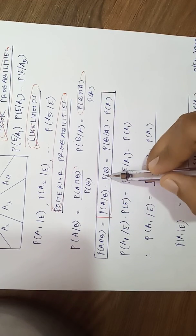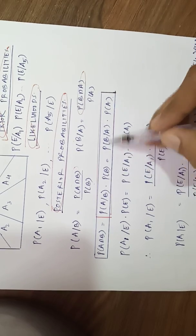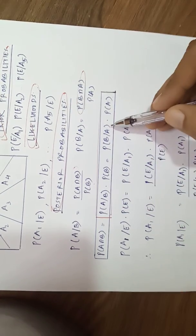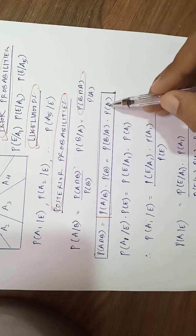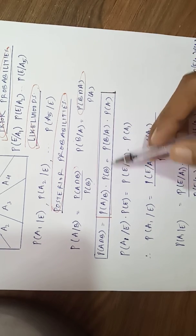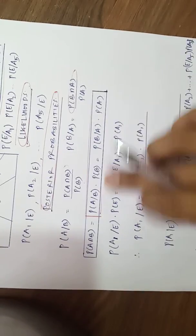Probability of a given b into probability of b is same as probability of b given a into probability of a. This is the multiplication theorem.